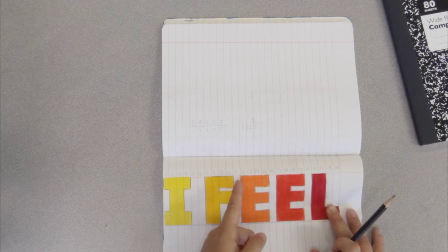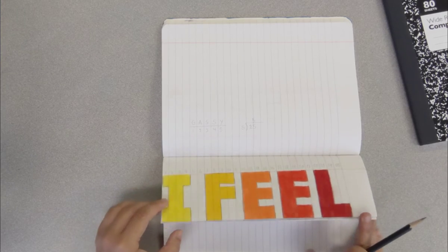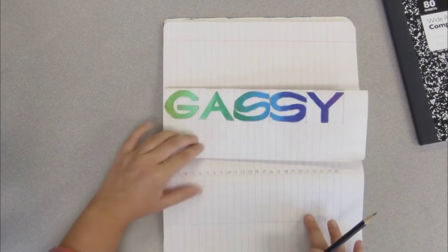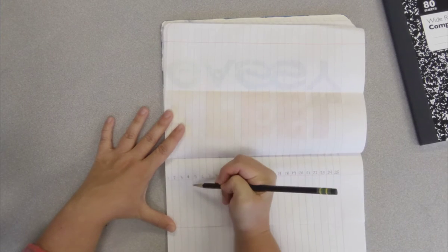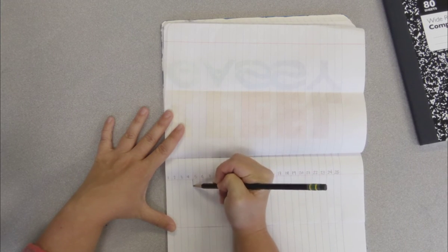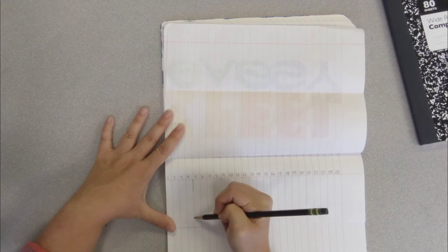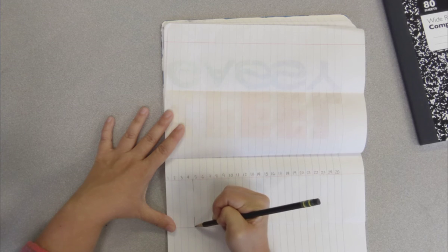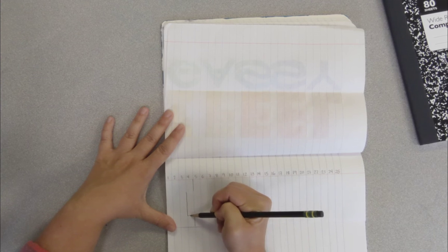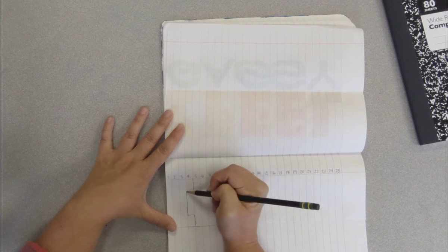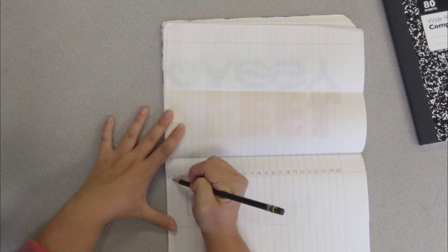I'm gonna do my I, and then I'm gonna skip two spaces, and then I'll do the feel word, leaving just one line in between each letter for the space. So starting at 1 and going to 4, we're gonna do block letters for our I.